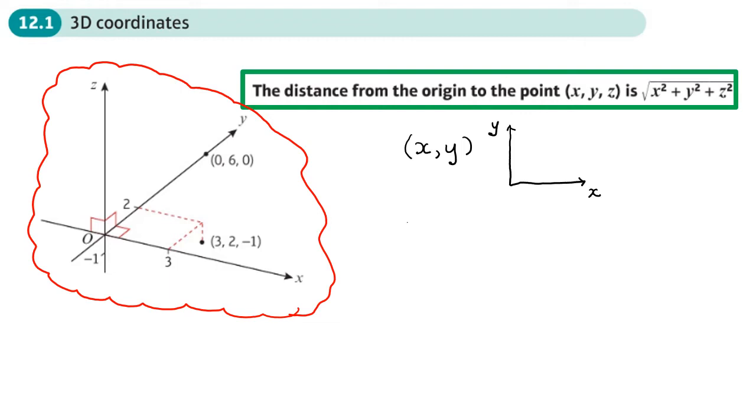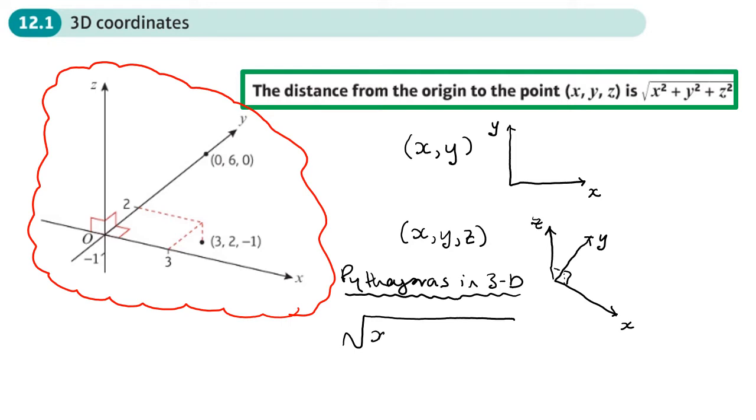In our 3D plane, we have these three coordinates. We just add an extra coordinate, X, Y, and Z. I'll try and draw that plane here. So Z, Y, these are right angles here. Y and we've got our Z that goes up. What we need to do is work out the distance, not only between two 3D points, but also the distance between the point and the origin. And the way we do that is we just use Pythagoras in 3D.